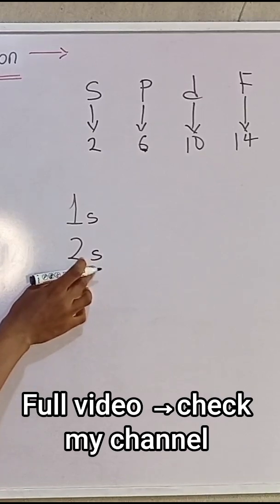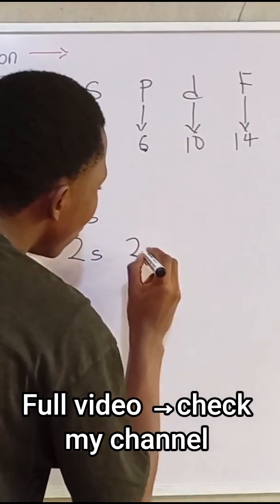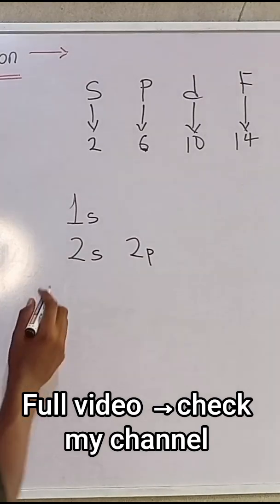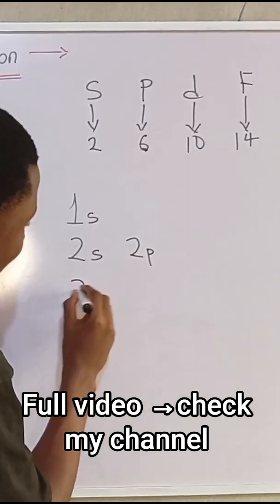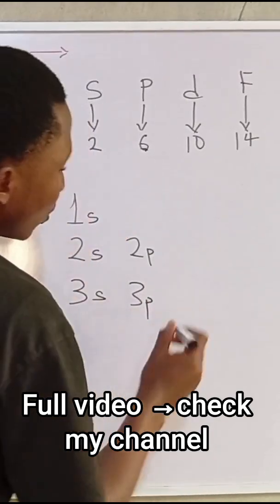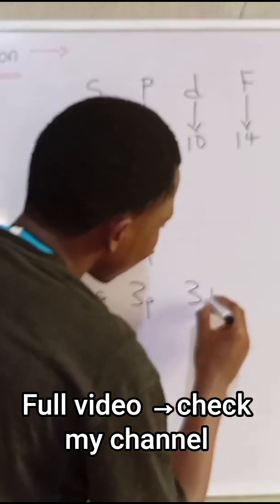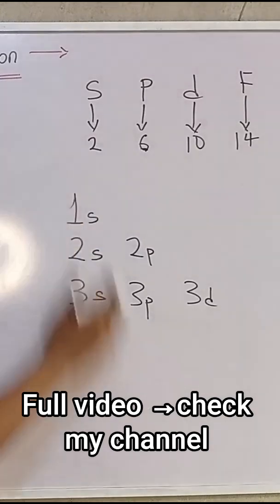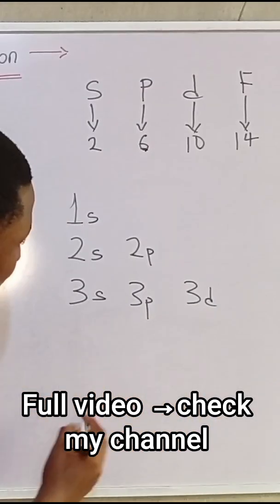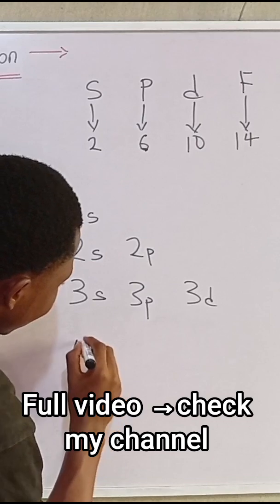The second energy level has S orbital and P orbital. Are we following? Now the third energy level has S orbital, P orbital, and D orbital. I hope you see I'm following. You can draw this thing even when writing an exam very fast. You know it's not hard.